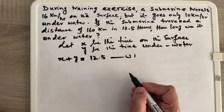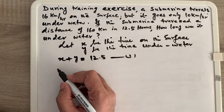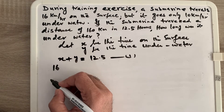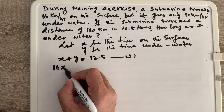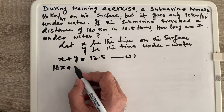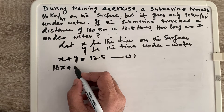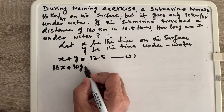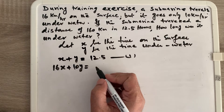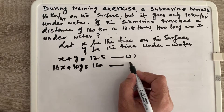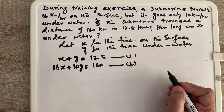My Equation 2 will use the kilometers per hour values. x represents time on the surface at a speed of 16 kilometers per hour, and y represents time underwater at 10 kilometers per hour. So: 16x + 10y = 160. This is Equation 2.